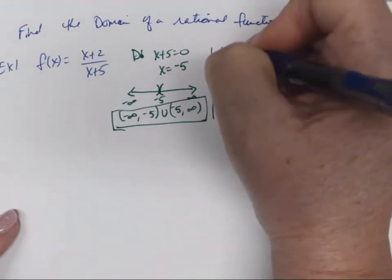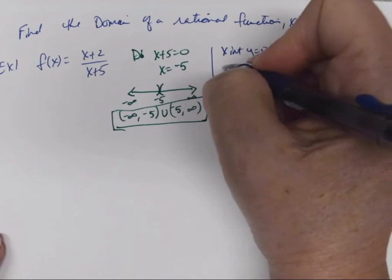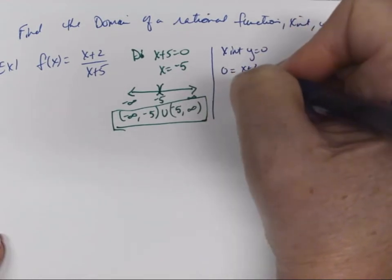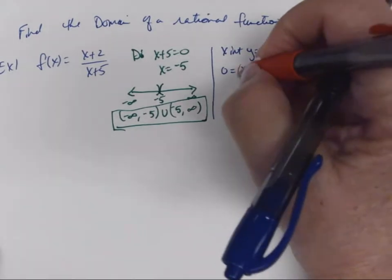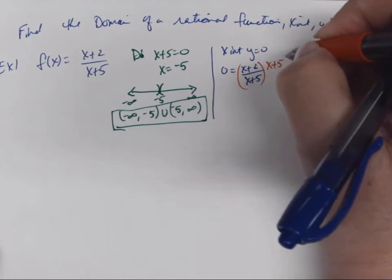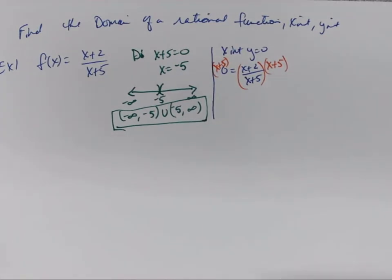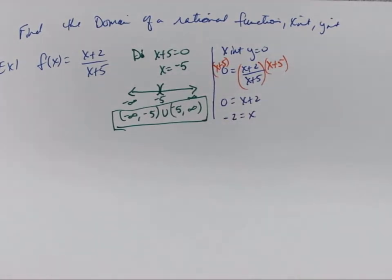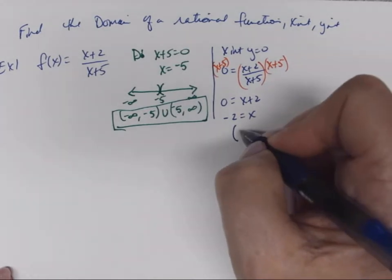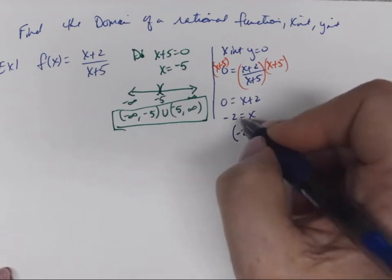Now let's look at the x-intercept. Remember, you set y equal to 0. So 0 = (x+2)/(x+5). We clear the denominator by multiplying both sides by (x+5). Anything times 0 is still 0, so 0 = x+2. Moving the 2 over gives x = -2. Since this is a point, the x-intercept is (-2, 0).